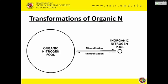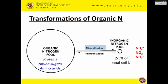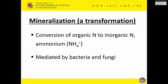When we look at nitrogen transformations in the soil, there is a huge organic nitrogen pool from organic matter. This is in equilibrium with what's called inorganic nitrogen — a tiny pool by comparison. In the organic pool we have proteins, amino sugars, and amino acids. The process of converting organic to inorganic forms is called mineralization. Through this process, the organic pool is converted to ammonium, nitrate, and nitrite — three inorganic nitrogen forms. The opposite process, where organisms take up inorganic forms and convert them back to organic nitrogen, is called immobilization.